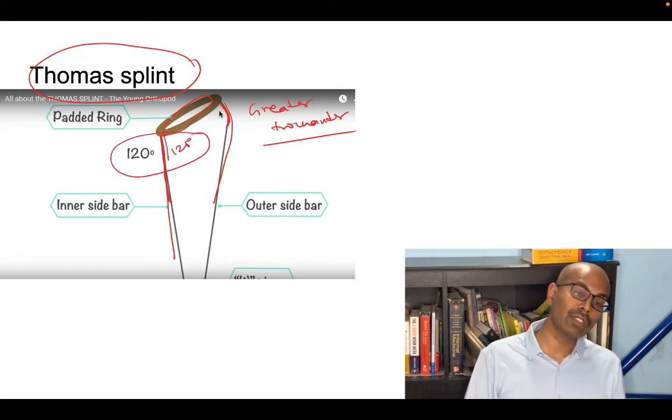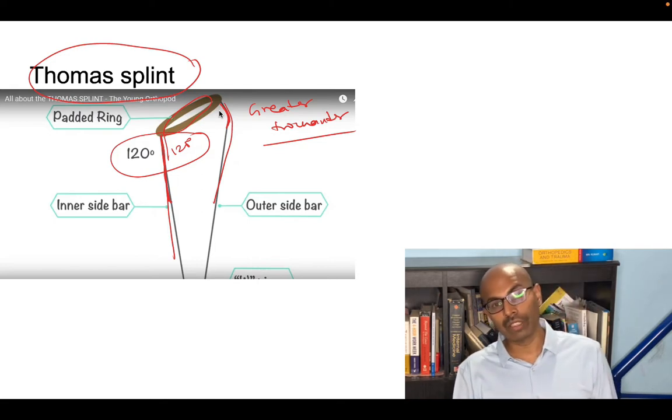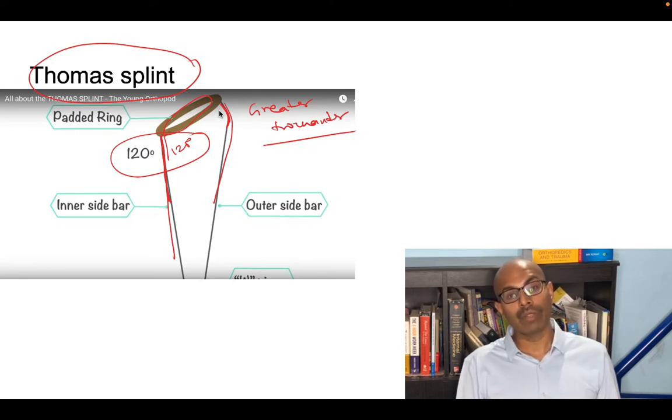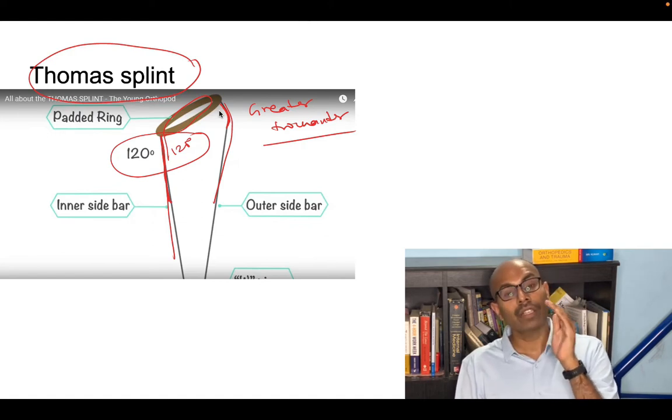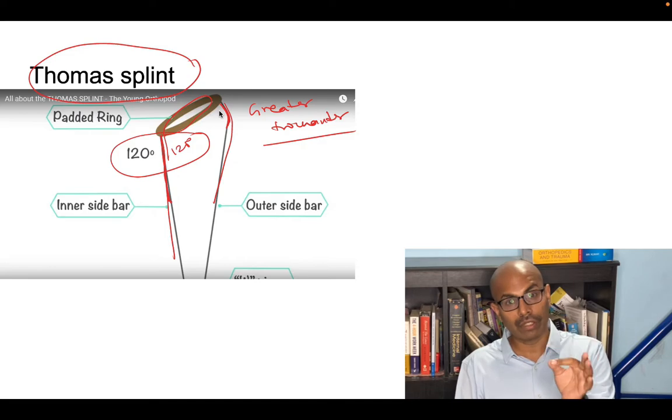The most common indication for a Thomas splint right now is a femoral shaft fracture, temporary immobilization. It was initially used for TB of the hip and other pathologies. Remember it has an inner bar and outer bar. The outer bar has a bend to accommodate the greater trochanter. The angle is 120 degrees. Don't forget that.